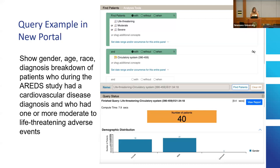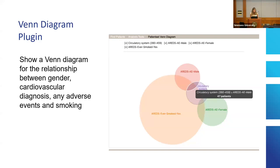One of the other things we showed, which you'll hopefully see tomorrow, is this Venn diagram. During our work with the i2b2 group, I suggested it would be nice to have a plugin like this, and then Nick — Nick Bennick — went and created it. It's fantastic. It does break down if you add too many different patient sets, but you can't add too many into the diagram.